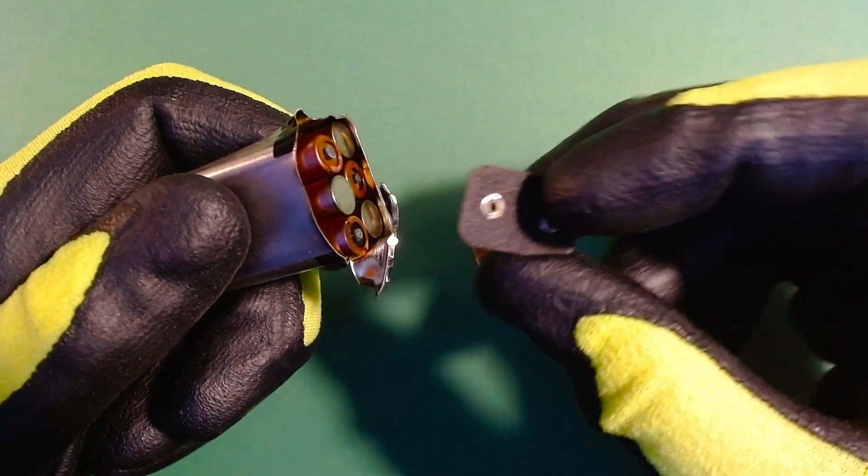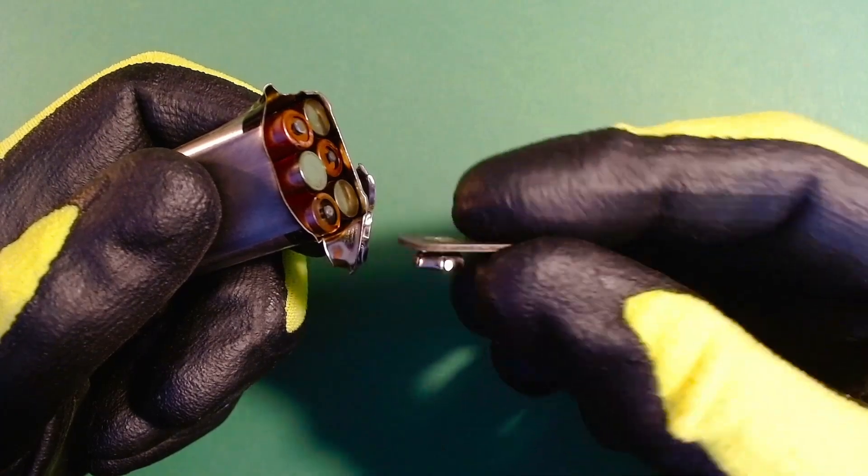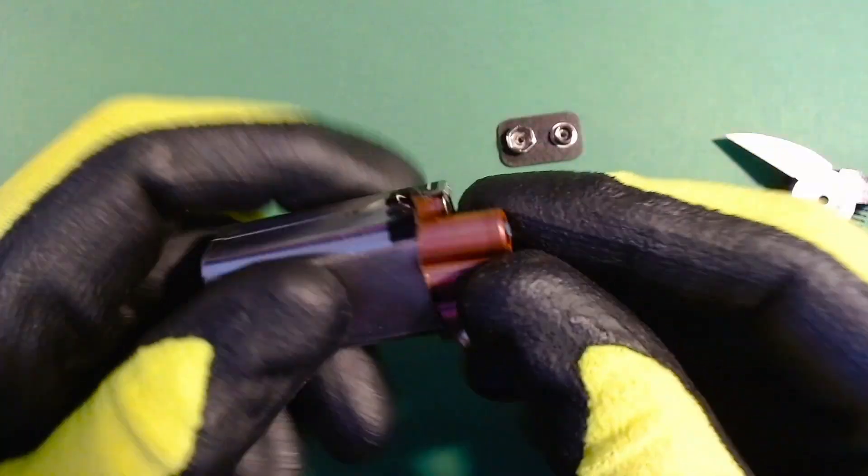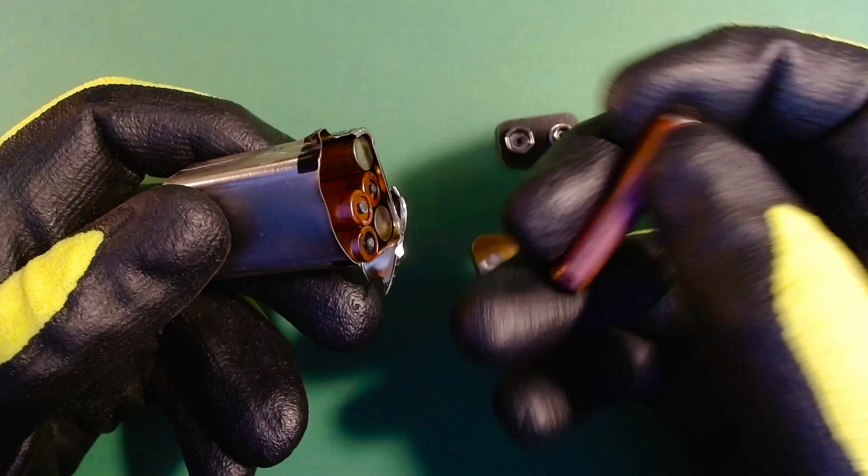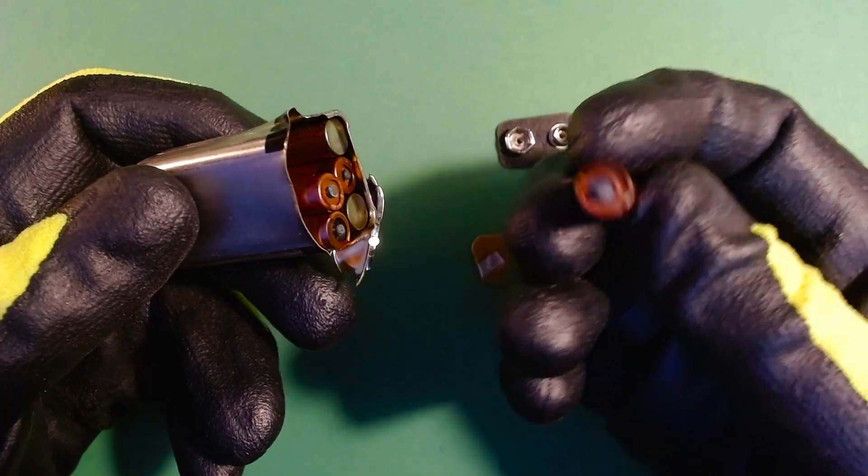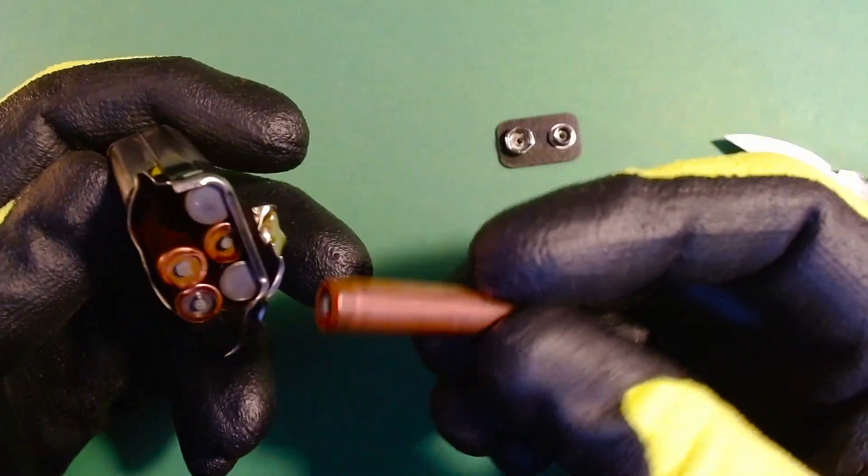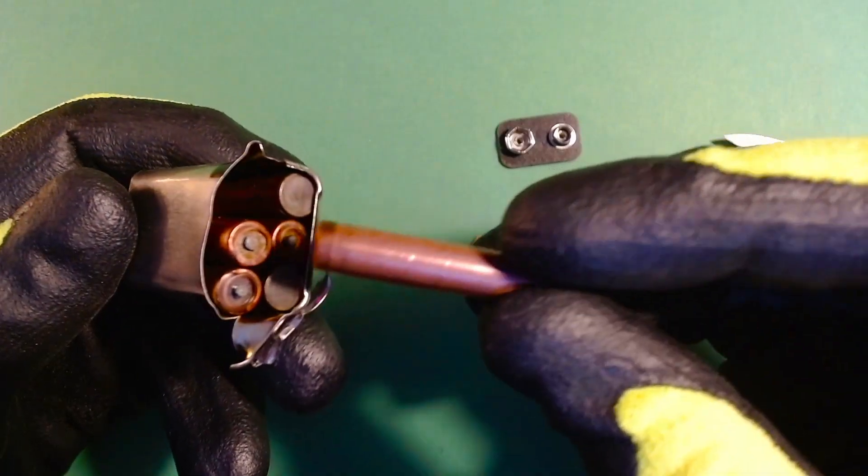Some batteries are a bit different inside, but essentially this is the bit that we want. And just for interest, you can see inside here that we have six little cells that are 1.5 volts each. And if you add up the six times 1.5, you get nine volts.